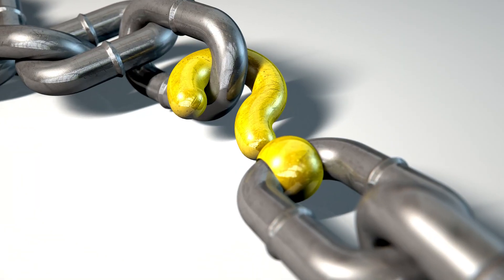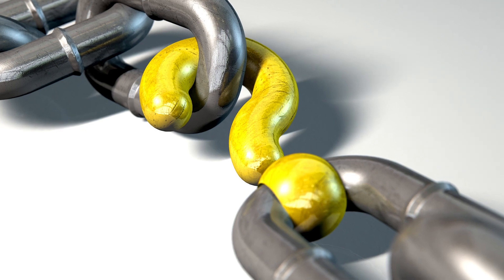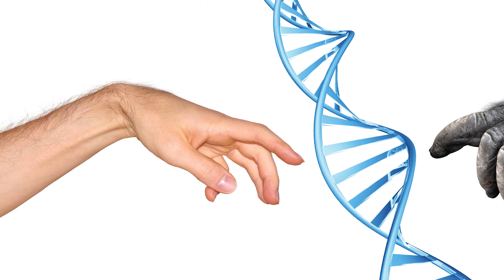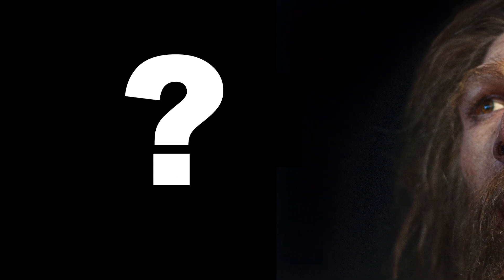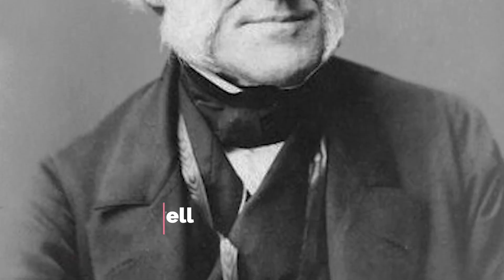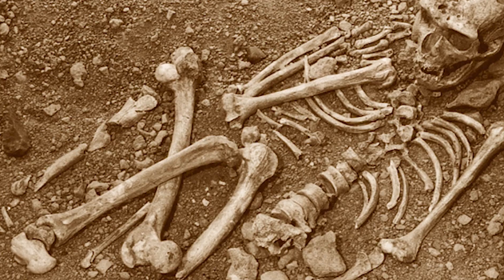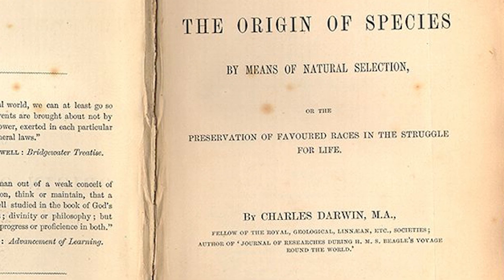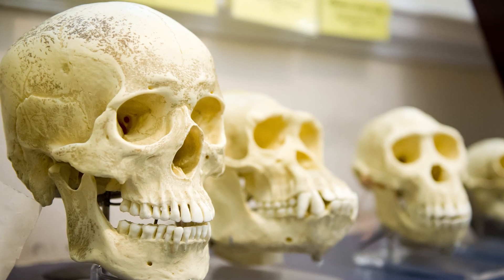The missing link is a term often thrown around by the media to describe fossils that are believed to bridge the evolutionary split between higher primates, such as apes and humans. The term missing link was first used in 1851 by Charles Darwin's mentor, Charles Lyell, to describe samples of fossils he had found. Eight years later, Darwin published The Origin of Species, in which contrary to popular belief, he never used the term while describing his theory of human evolution.